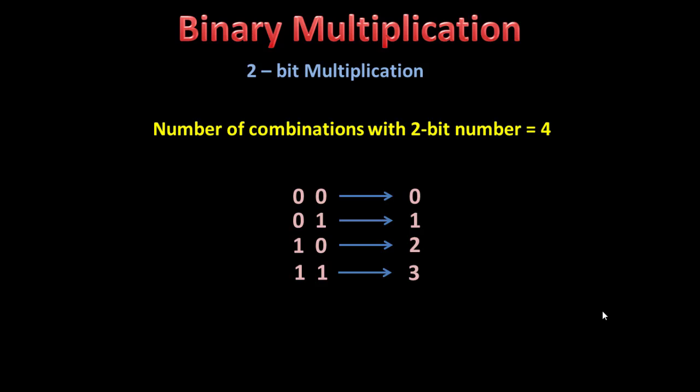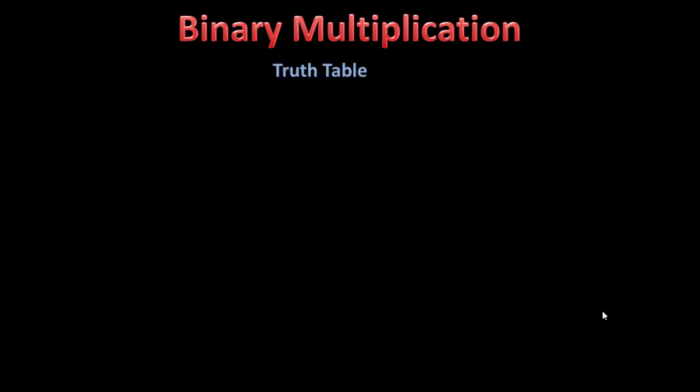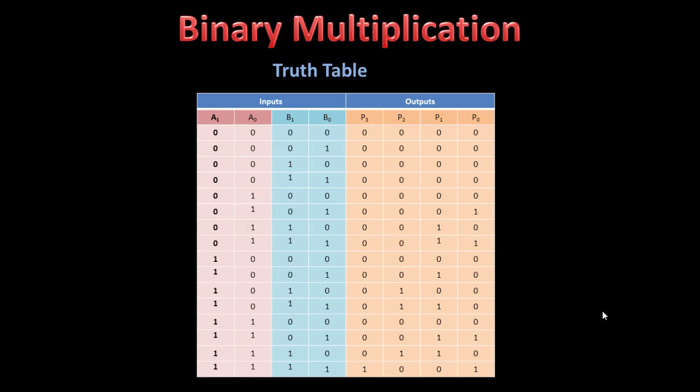So this is 0, 1, 2, 3 — we are multiplying this 0, 1, 2, 3 with another 0, 1, 2, 3. This is the truth table of the multiplier. On the left side, we have b0, b1, a0, a1. So b0 b1 is a 2-bit number which is multiplied by a0 a1, which is another 2-bit number. On the right side, we have the outputs p0, p1, p2, p3. So we expect the output would be of 4 bits. These are the inputs and the outputs.